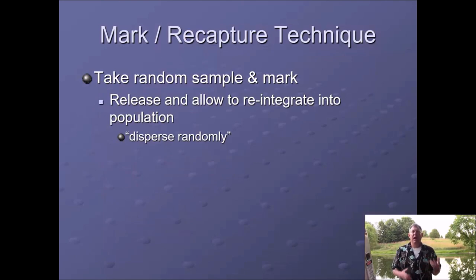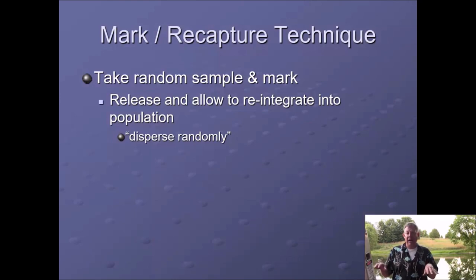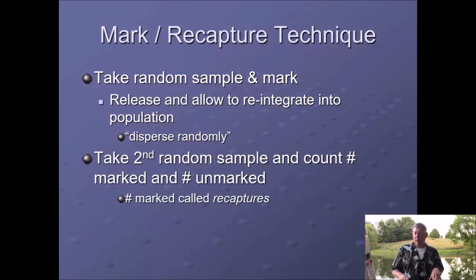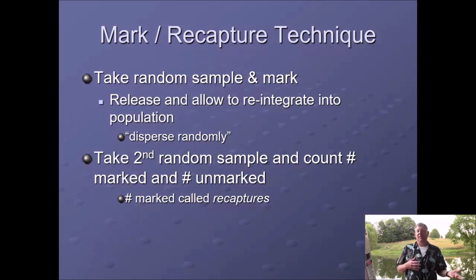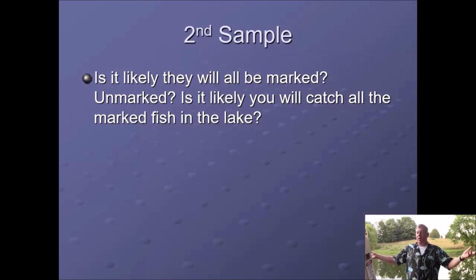We've talked about density of fish populations and how to mark a fish. Now let's talk about how we're going to use those marked fish to estimate the density of a fish population. We're talking about mark recapture studies, and the two most common are called the Peterson mark recapture and the Schnabel mark recapture. The broad idea: you take a random sample of fish, mark them, release them, and allow them to reintegrate into the population — we want them to disperse randomly, so you've got to give them some time. Then you take a second random sample and count the number of marked and unmarked fish. Those caught a second time we call recaptures or recaps.